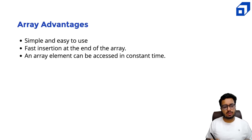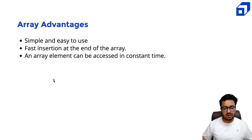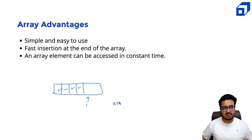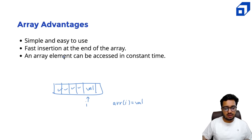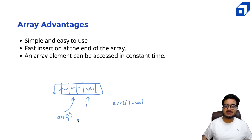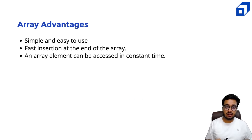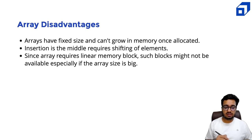Let us talk about the advantages of arrays. They are very simple and easy to use. Insertion is really fast at the end of the array — you can simply say array[i] = value and that value gets stored. Array elements can also be accessed in constant time, O(1). If you want to get the jth element, you can access any random index in just order-one time. That is a key advantage of an array.